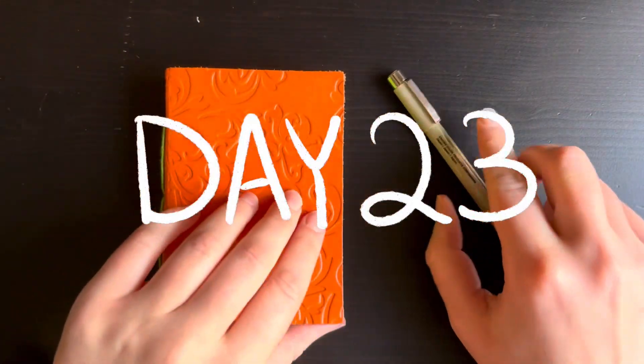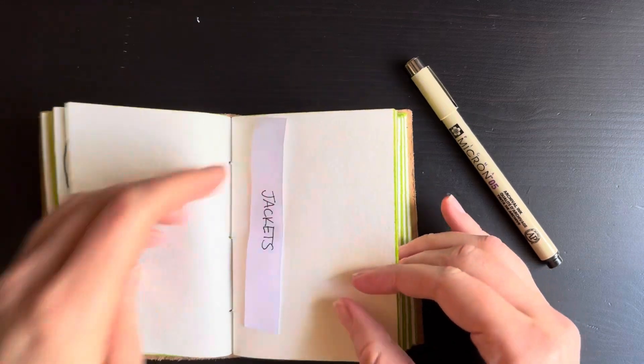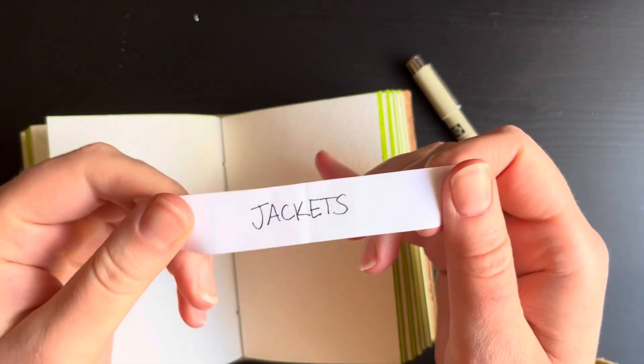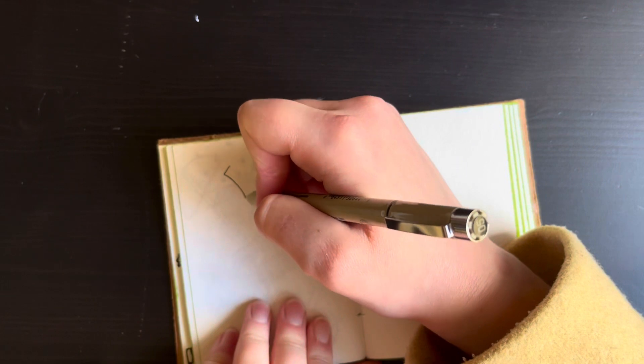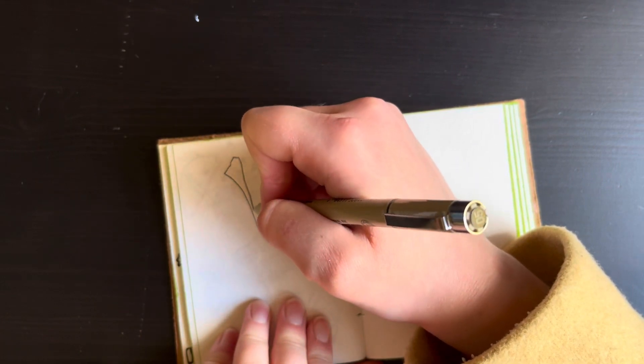Hello friends, Kelly here, and today is day 23 of Inktober. My prompt today is jackets, which of course is right up my alley. I love drawing clothes, and so we're gonna draw some cool jackets.